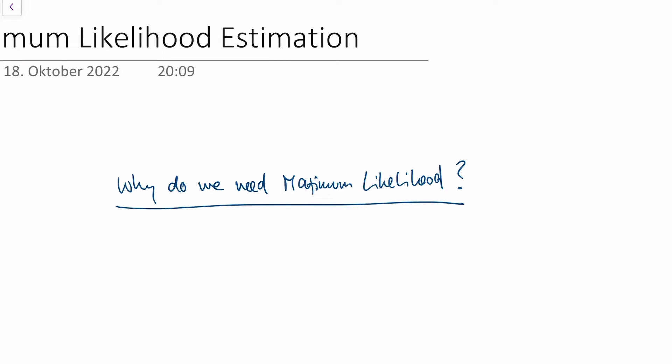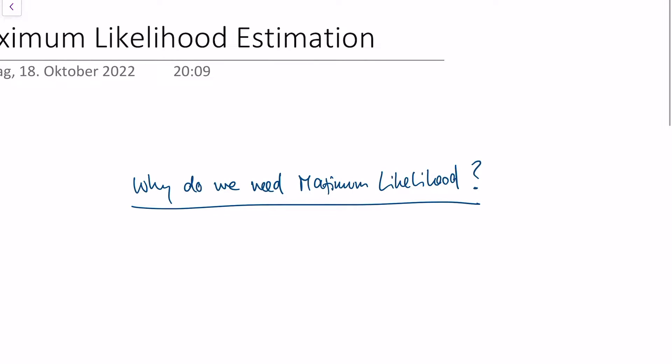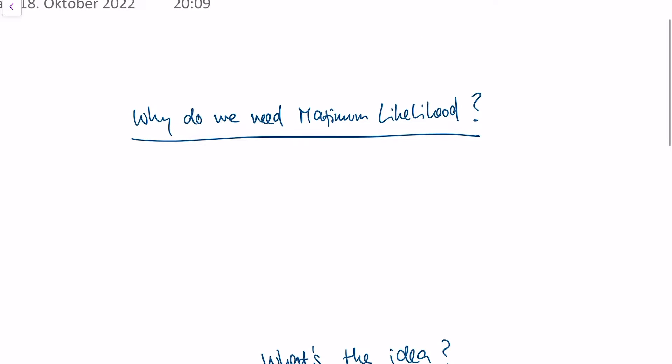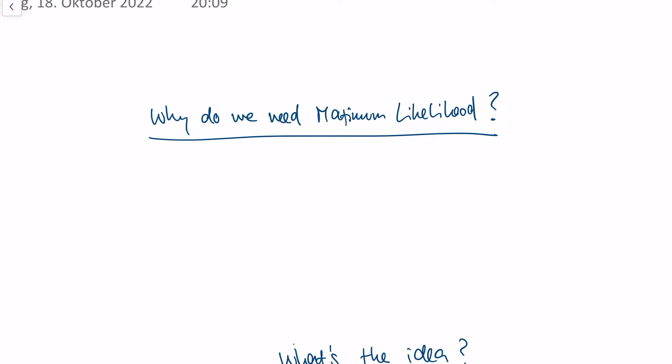What is maximum likelihood? The first question I need to answer is: why do we need it? Maximum likelihood is a useful method to understand how we can estimate parameters of a distribution. Let's say that something is, for instance, Bernoulli distributed.